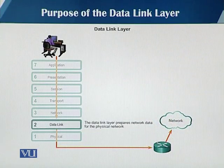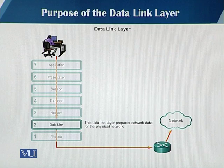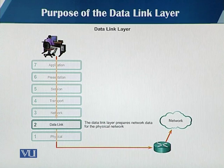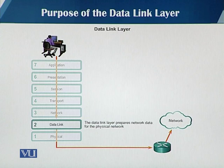The purpose of the data link layer is to transmit a frame from one end of the wire to the other end of the wire. It takes data from layer three, which is the network layer, encapsulates it into a frame, and then gives it to the physical layer, which eventually transmits the data in the form of bits or electrical signals.